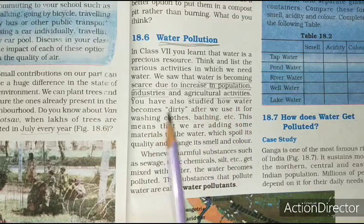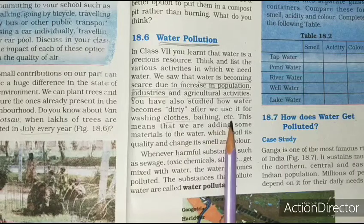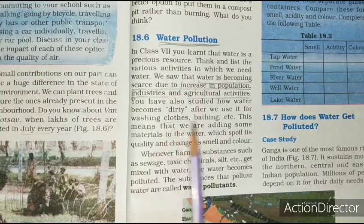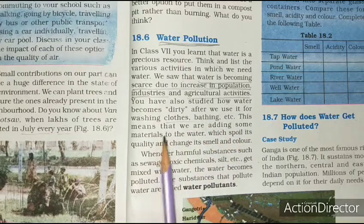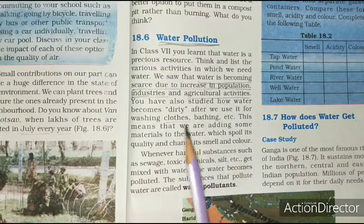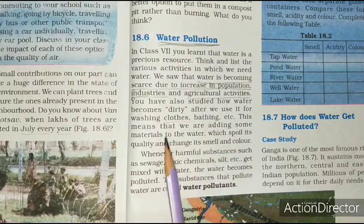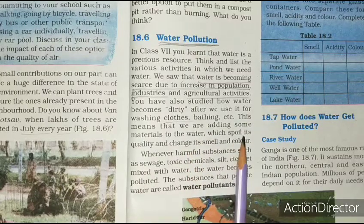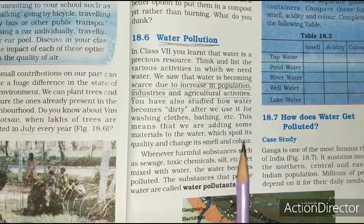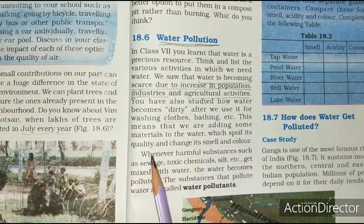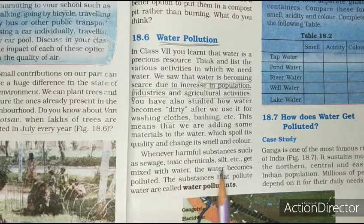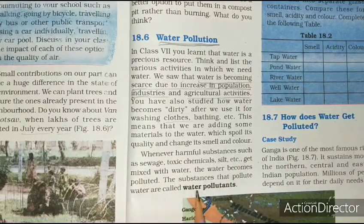You have also studied how water becomes dirty after we use it for washing clothes and bathing. This means that we are adding some material to the water which spoils its quality and changes its smell and colour. Whenever harmful substances such as sewage, toxic chemicals, silt etc. get mixed with water, the water becomes polluted. The substances that pollute water are called water pollutants.